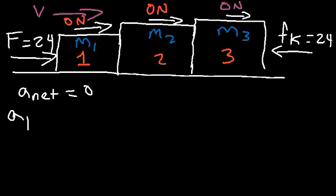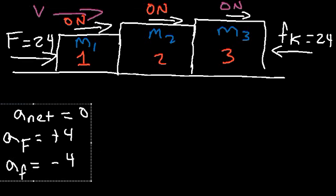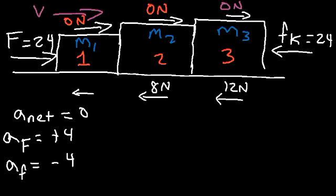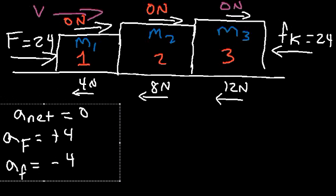The acceleration due to the applied force is 24 divided by the total mass of 6, which is positive 4. The acceleration due to friction is negative 4, so the net acceleration is 0. The frictional force on block 3 is 4 times 3, which is 12 newtons. The frictional force on block 2 is 4 times 2, which is 8 newtons. And the frictional force on block 1 is 4 times 1, which is 4 newtons. With this information, we can calculate the contact forces.